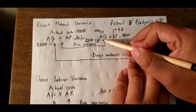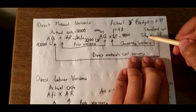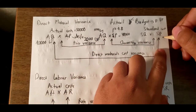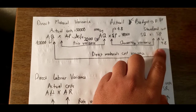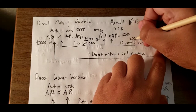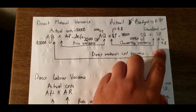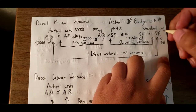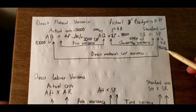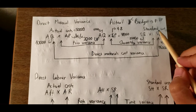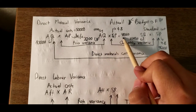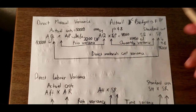We also have the quantity variance. For the quantity variance, we compare actual quantity and standard quantity using the standard price. For example, the standard price is $4.8 and the standard quantity is 20,000, so the standard cost is $96,000.